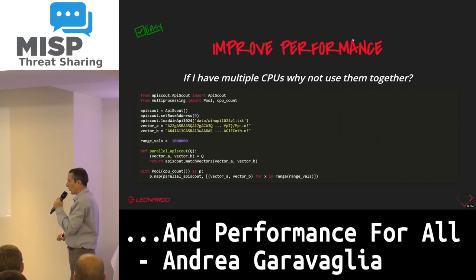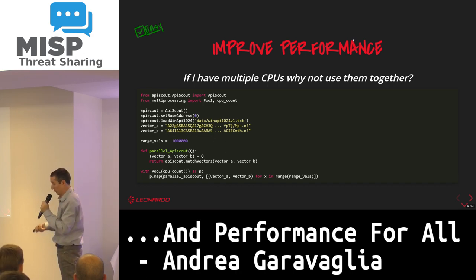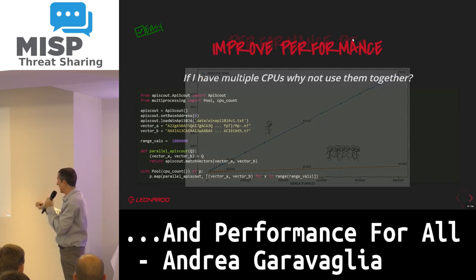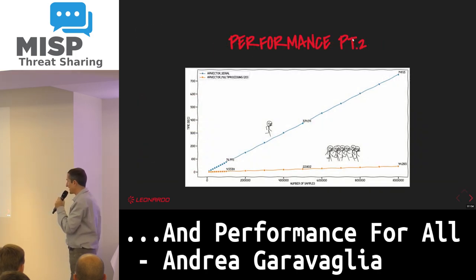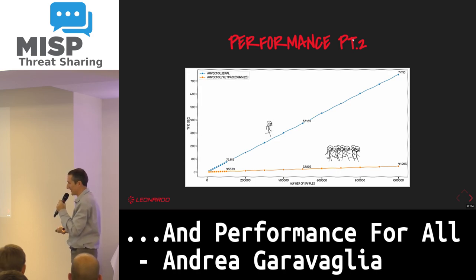We started easy. What can I do here? If I have a multi-core CPU — everyone has one, even on a laptop — why not use multiprocessing? With 20 cores, we reduced the time by almost 20 times. We were happy, but I said we can do more.